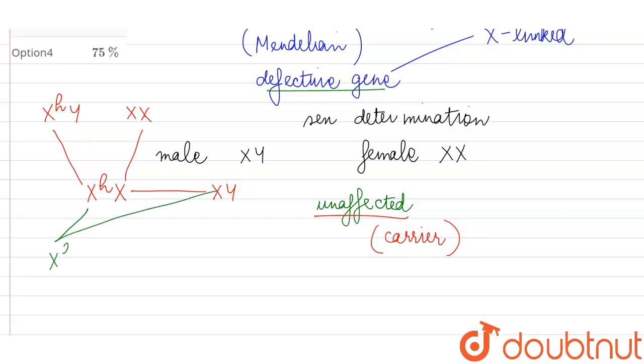It is possible that the daughter can be an unaffected carrier. It is also possible that the daughter can be completely unaffected - she does not receive the defective gene from either of her parents.